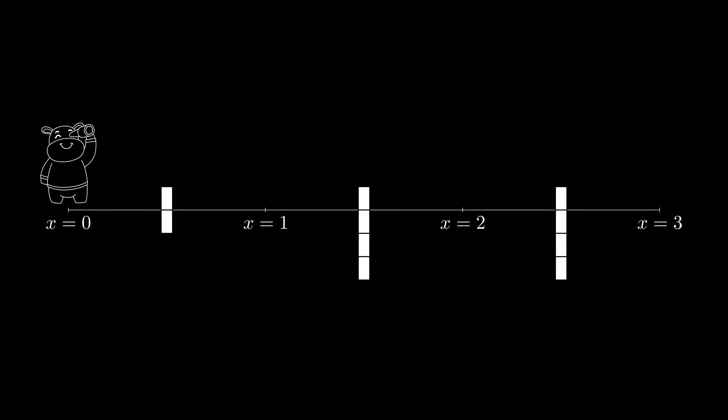Since we already have the array, we can build a histogram to visualize the array. The height indicates the number of crossings available at that point. As Bessie crosses over the bars, we reduce the height by one to keep track of remaining crossings at that point.